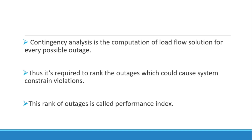The method by which we perform contingency analysis is the load flow. We simulate every possible outage on the network and perform the load flow. However, not every outage will necessarily cause a disturbance on the system, so it is required to rank the outages based on a certain index or value — this is called the performance index.